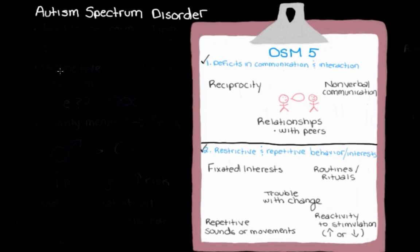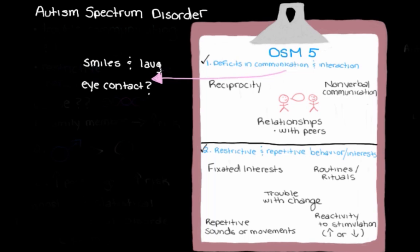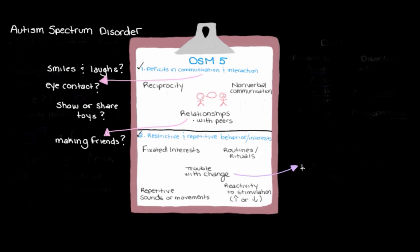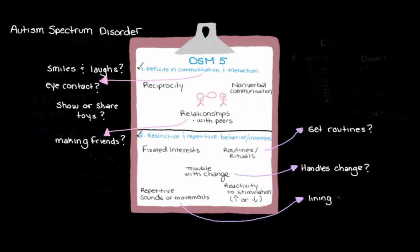These questions vary quite a bit depending on how old the child is. For a toddler between six months and two years old, we might ask parents if their child makes eye contact or smiles and laughs with them, or if the child tries to show or share toys. If the child is a bit older, we might ask how they're doing with making friends at school. To look for restrictive, repetitive behavior, we might ask how the child handles change or unexpected situations like a different bedtime routine or going on a trip, or whether they have habits like lining up toys in a special way, or if environmental stimuli like a car honking really tends to bother them.